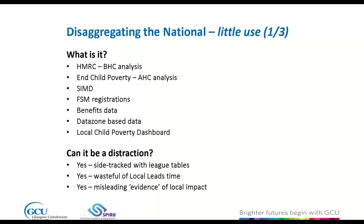The important point is that these data can be misleading evidence of local impact. Our control over child poverty locally is limited — we have no local control over national taxation and no control over welfare benefits and the level at which they are set. So we don't control two of the key levers which impact child poverty, and therefore using national data to evidence how effective our local actions are can be highly problematic.